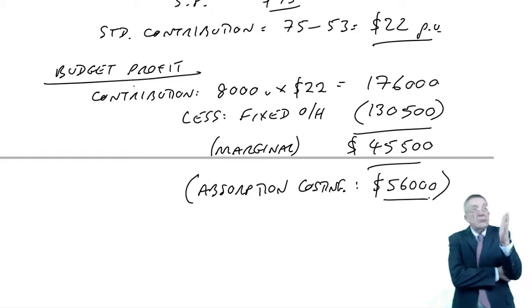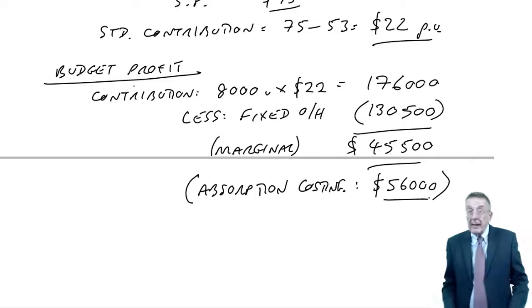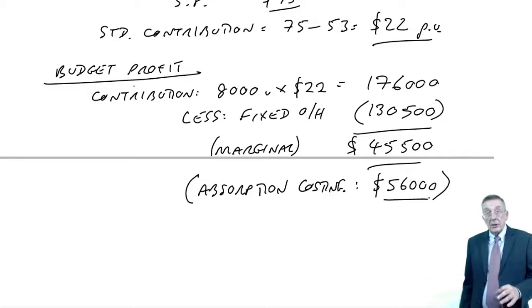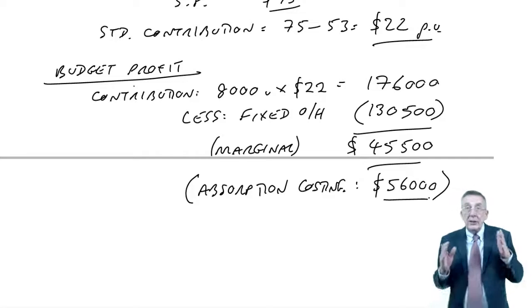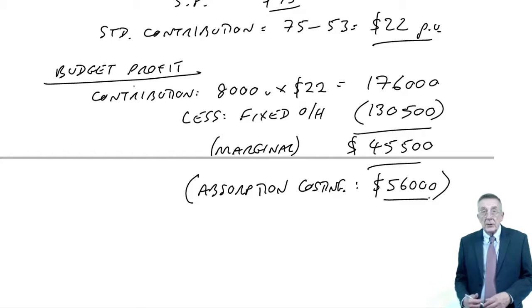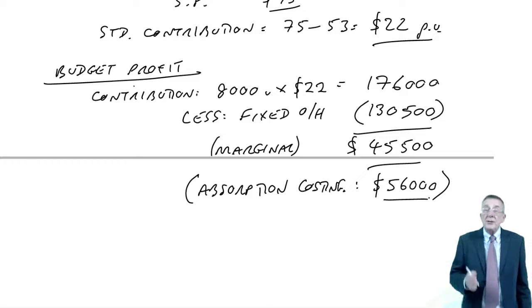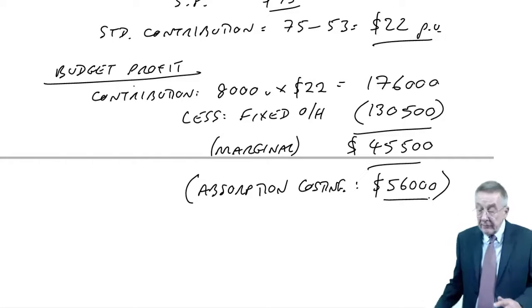I say again, this has absolutely nothing to do with variances at all. You should be happy already about the fact that marginal and absorption costing will give different profits. It's not a question of that's right, that's wrong. They do give different profits. We're not doing financial accounts. It's up to the management accountant, to the company, to decide which method they find more useful. And why do they give different profits? The only reason ever they give different profits is because the inventories are valued differently.